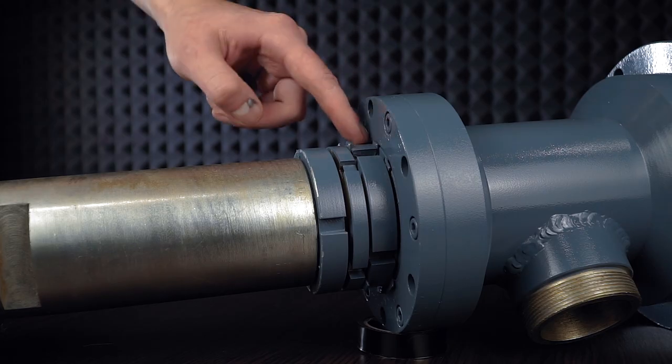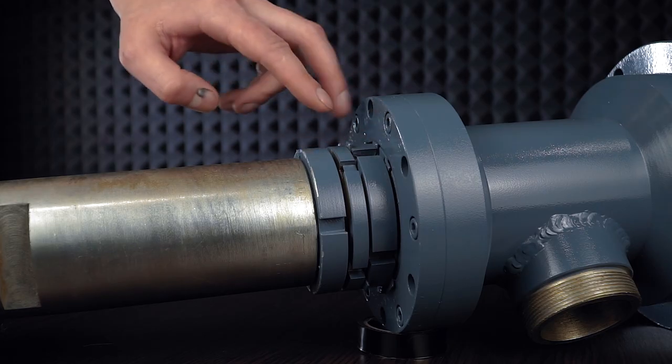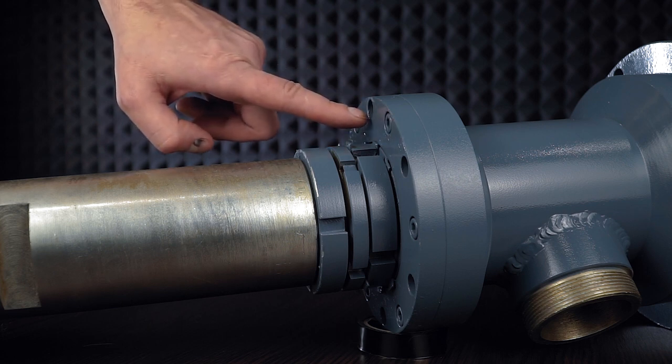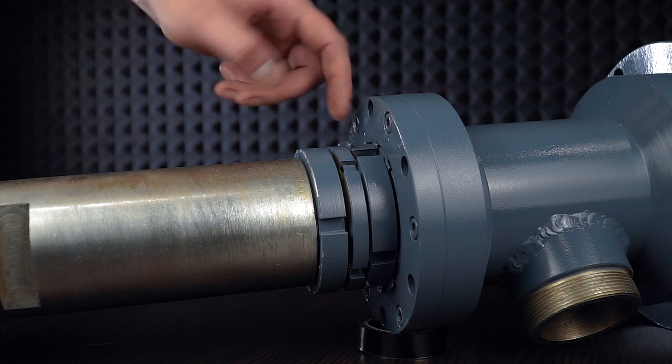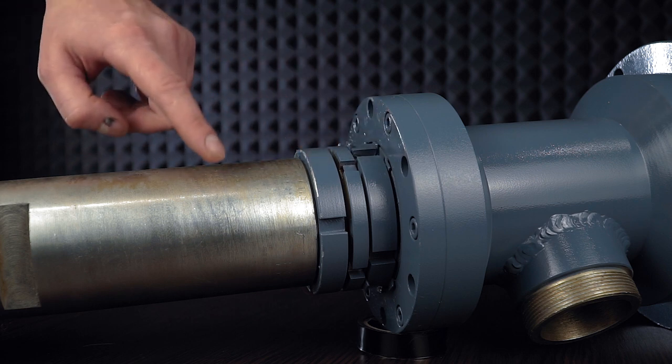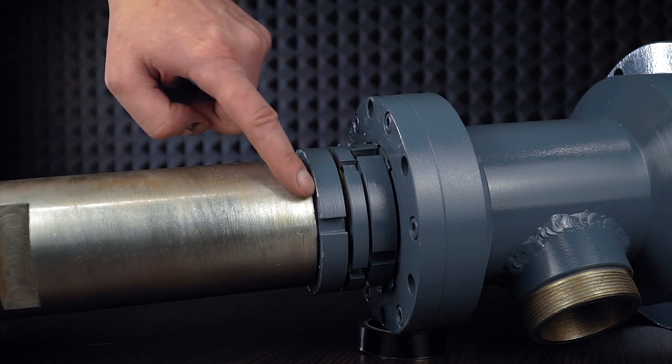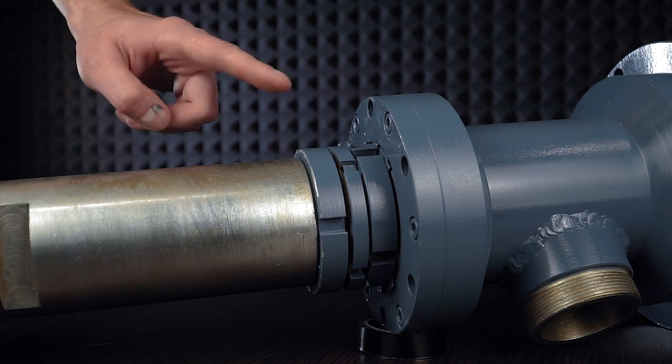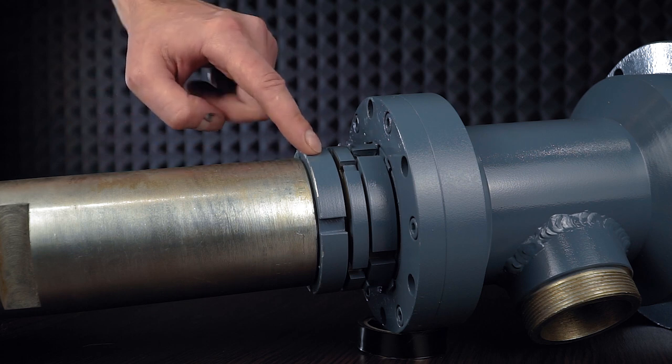I also want to note that here are placed three nuts. They perform different functions. Two nuts are tightening the bearings. They are fixed with lock washers. The third nut is used to fix the adapter. Here it needs to be welded. You do not need to weld this nut with other nuts.